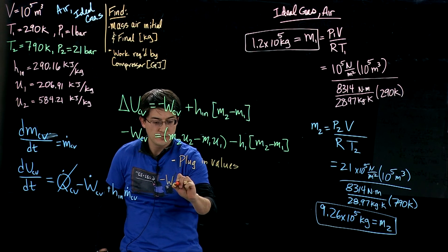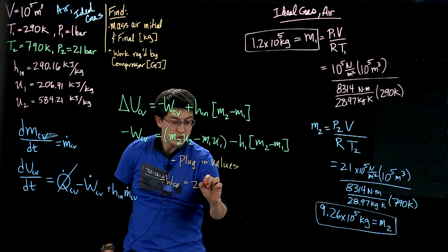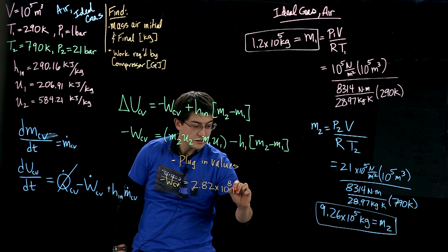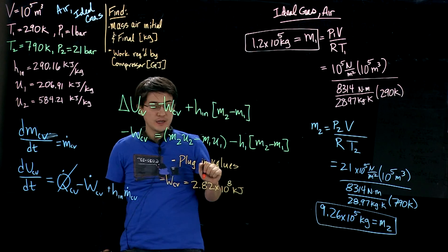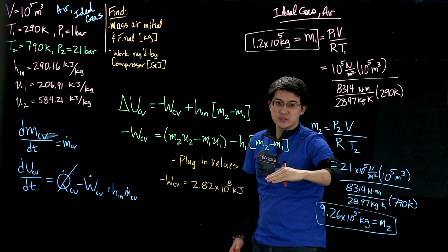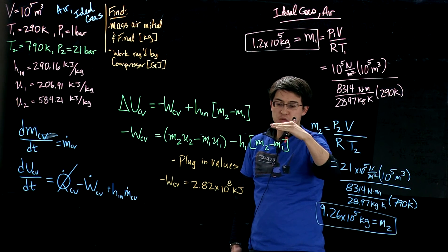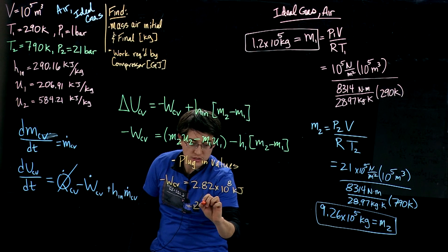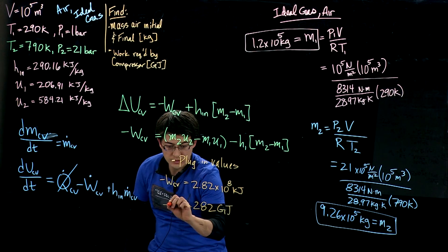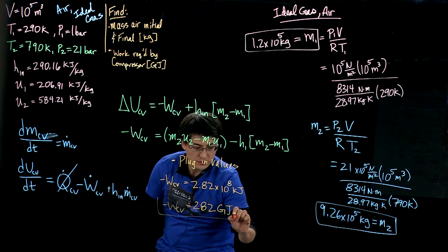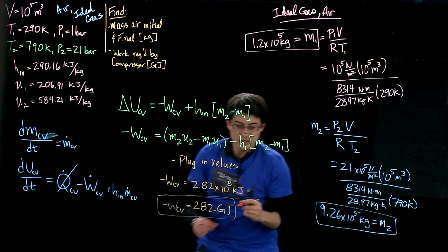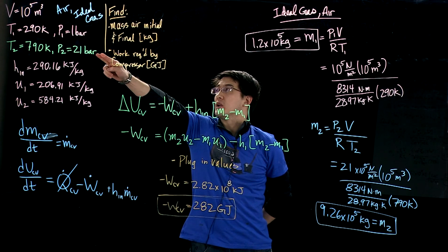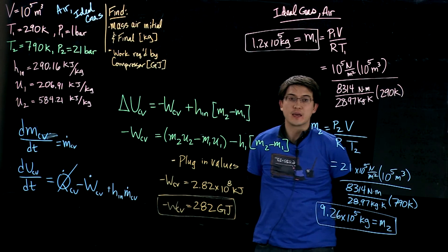Plugging in values, this is going to give you the value of 2.82 times 10 to the eighth kilojoules. It asks for gigajoules. A thousand kilojoules is megajoules and a thousand megajoules is gigajoules, so let's convert that and that will be 282 gigajoules. This is the energy required by the compressor to fill up that cavern full of air to 21 bar at 790 Kelvin.